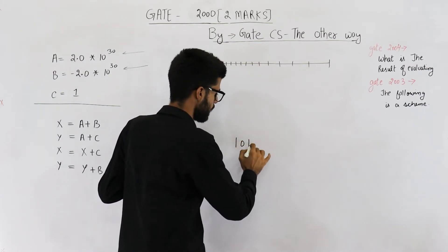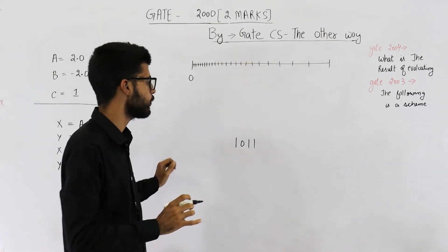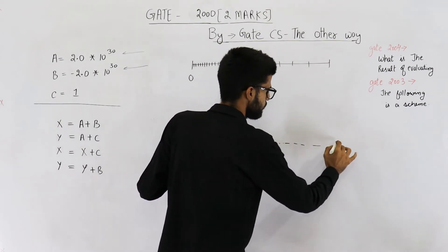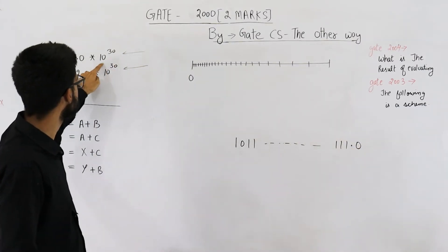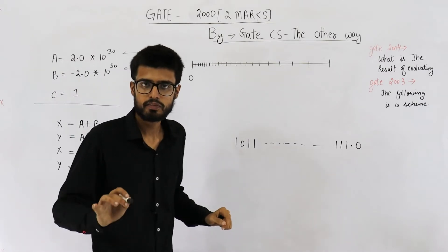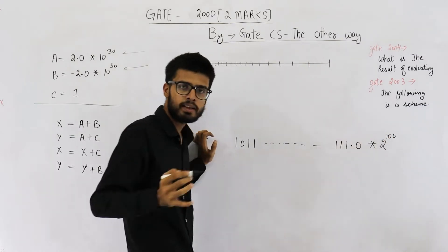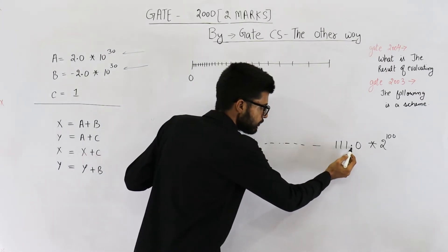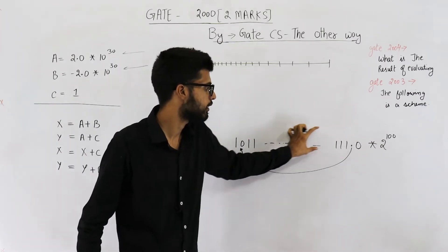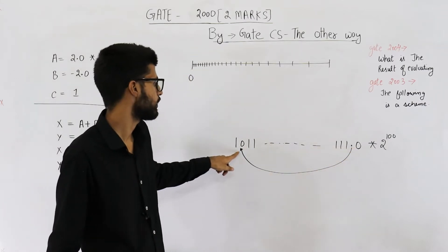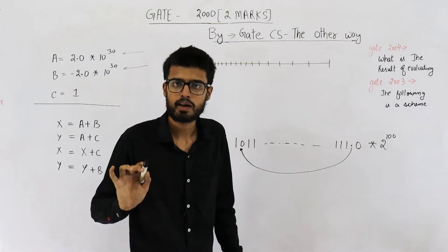Suppose those bits are 1, 0, 1, 1 — I'm not writing the exact value, just some random bits to convey that there will be 100 bits. This is the representation of the decimal number in binary. Now we will normalize it, so it will become 2 raised to the power 100. Because in implicit normalization, the radix point is shifted here by approximately 100 bits — placed just after the first one, since we assumed IEEE standard.